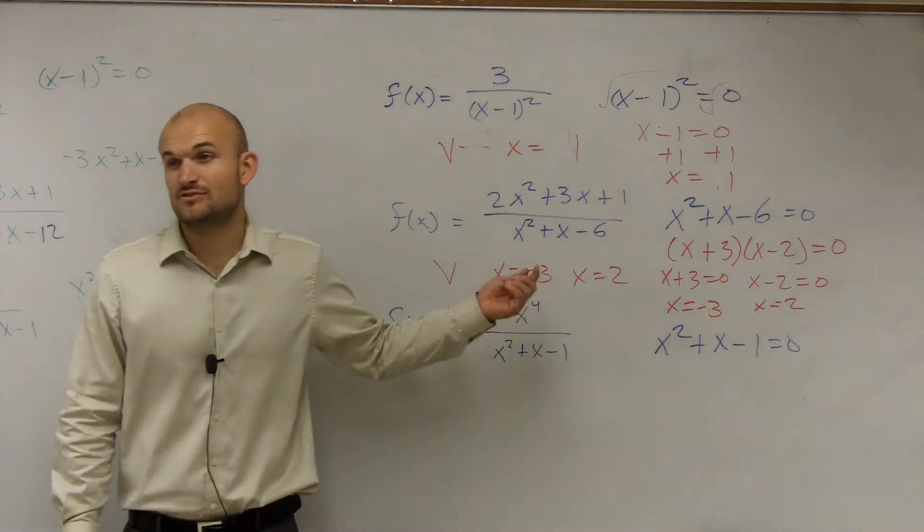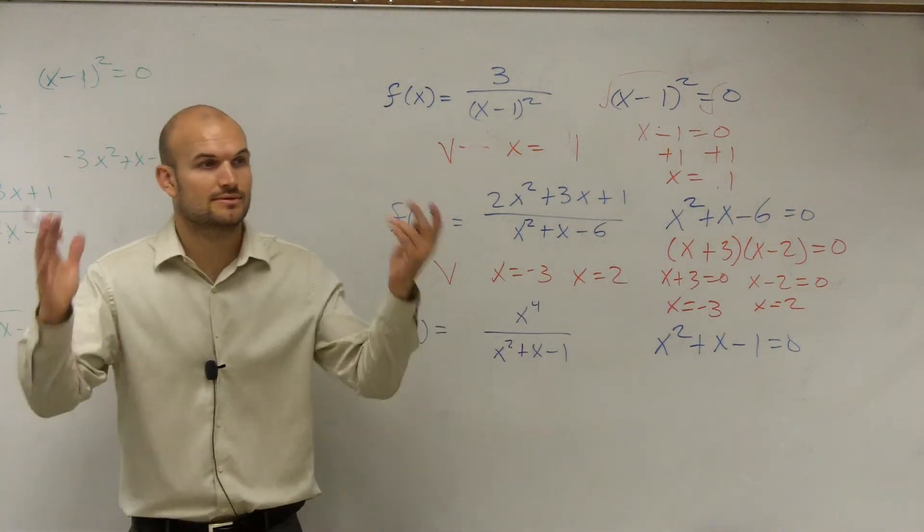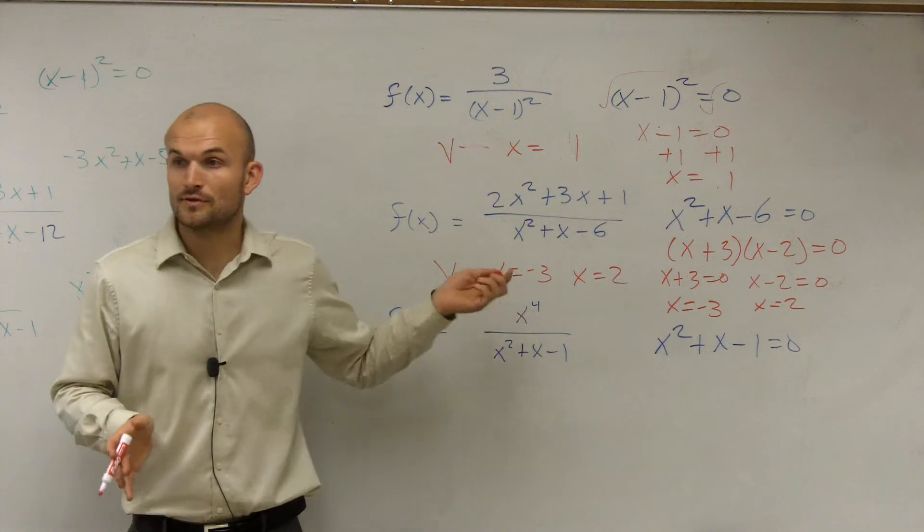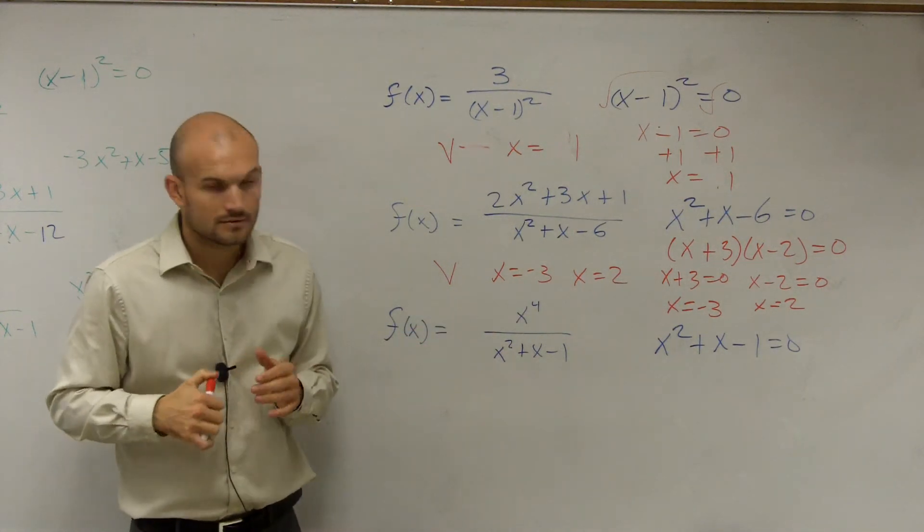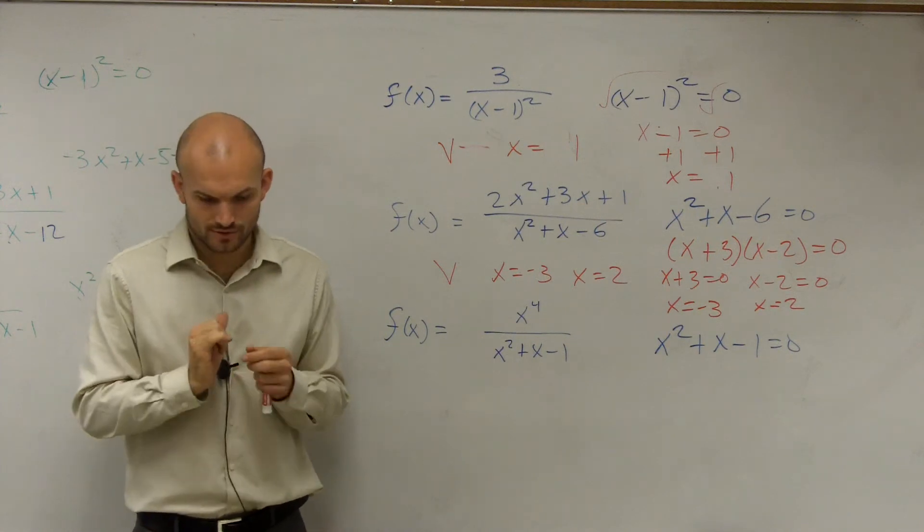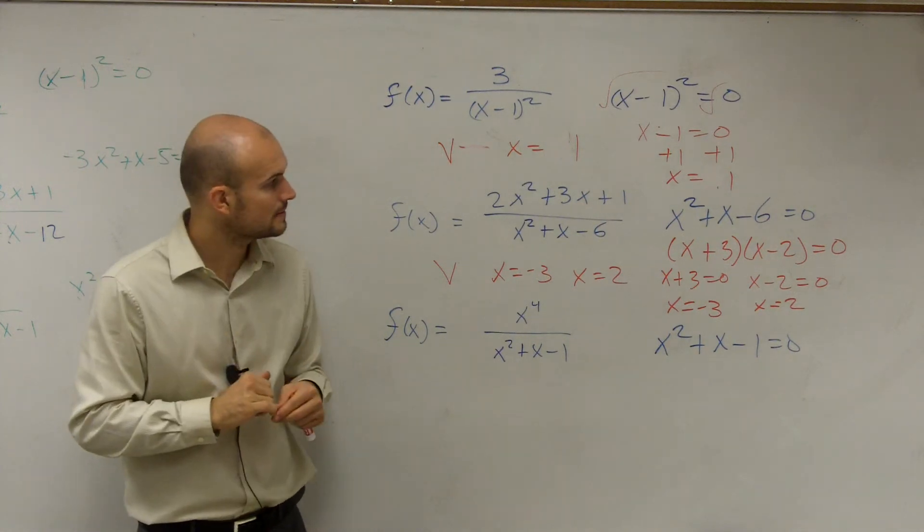Does that make sense? So now this graph is actually going to have two vertical asymptotes. So your graph is going to approach both of those lines as it goes to infinity and negative infinity. What does that look like? We'll look at them later in class today.